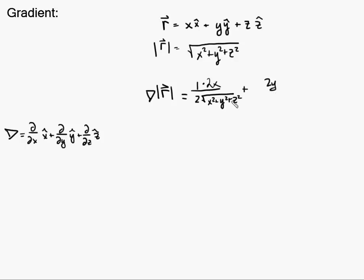So I'll have 2y, the partial with respect to y in the second term, and then the same thing on the bottom, 2 square roots of x squared plus y squared plus z squared. And for the third component, this is in the x hat direction, this is in the y hat direction, and the third component is in the z hat direction. I have 2z over 2 square roots of x squared plus y squared plus z squared. And this is in the z hat direction.